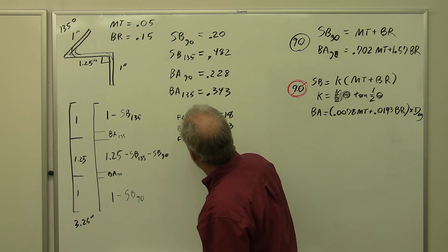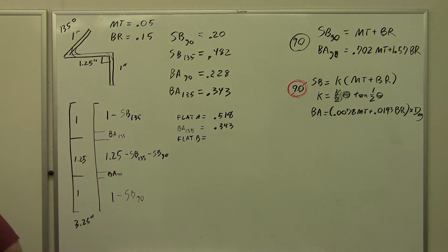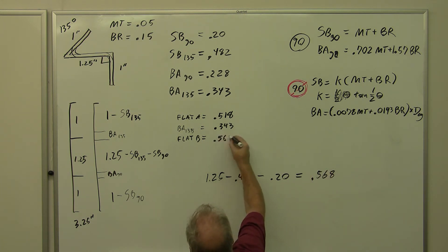My flat B equals 1.25 minus, now this is where she gets crazy again. I'm going to write this down over here as a formula: 1.25 minus setback 135, which is 0.482, minus setback 90, which was 0.2. That equals 1.25 minus 0.482 minus 0.20, which gives me 0.568. So flat B is 0.568.